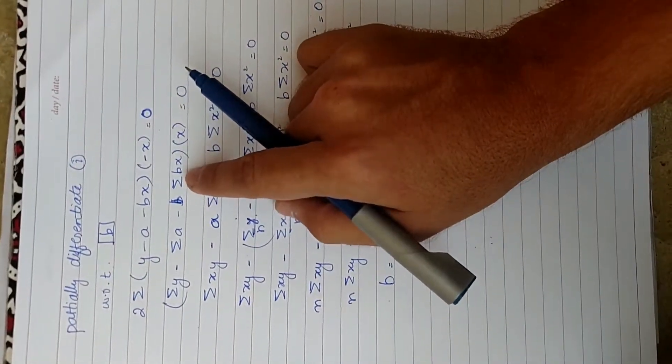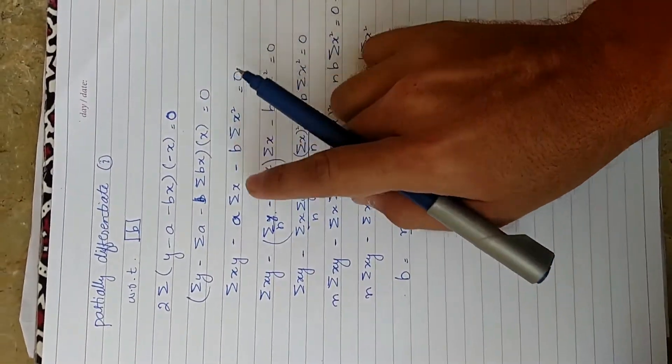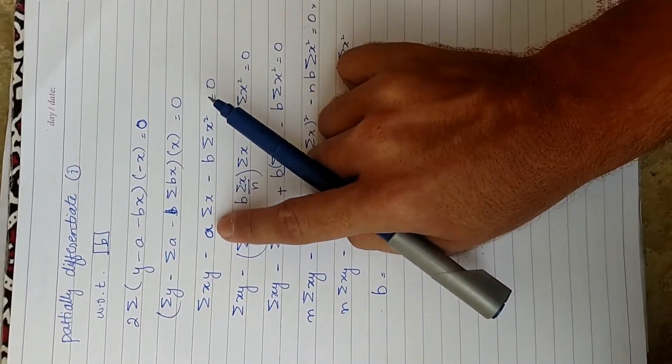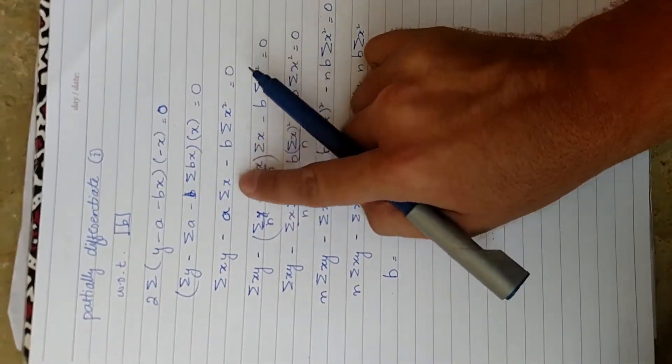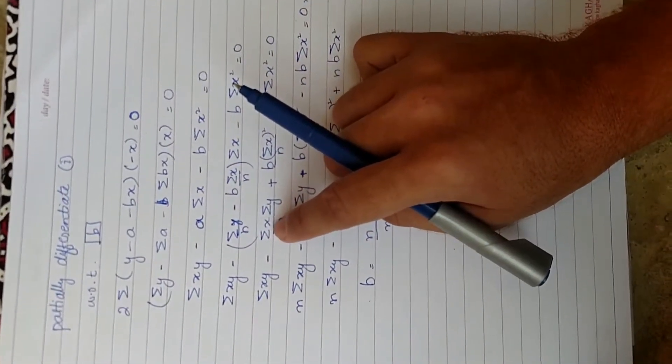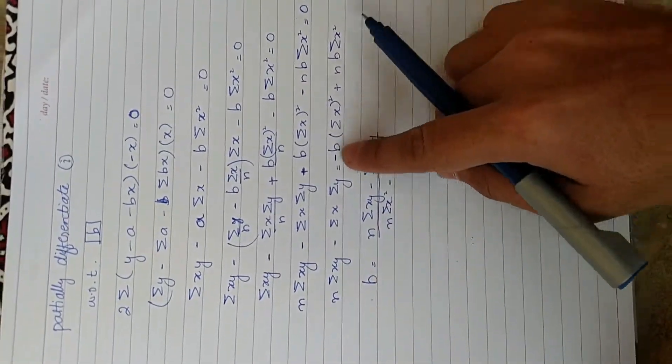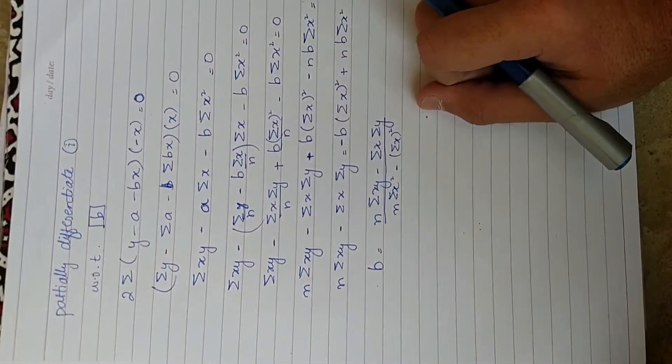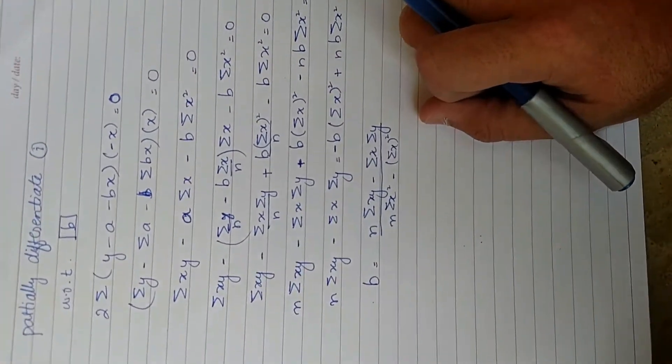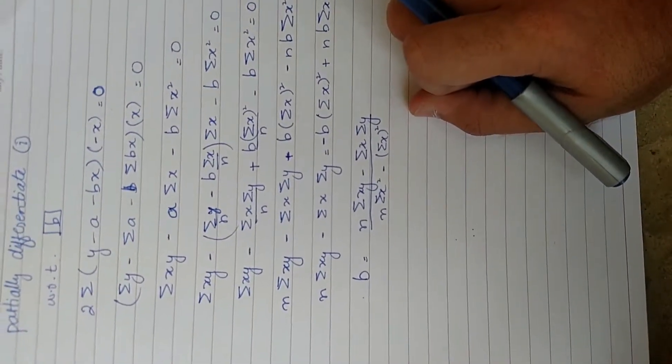We previously found this formula. After doing further substitution, we came to a conclusion: this is the formula for b. Now using these two formulas of a and b, we are going to find our line.